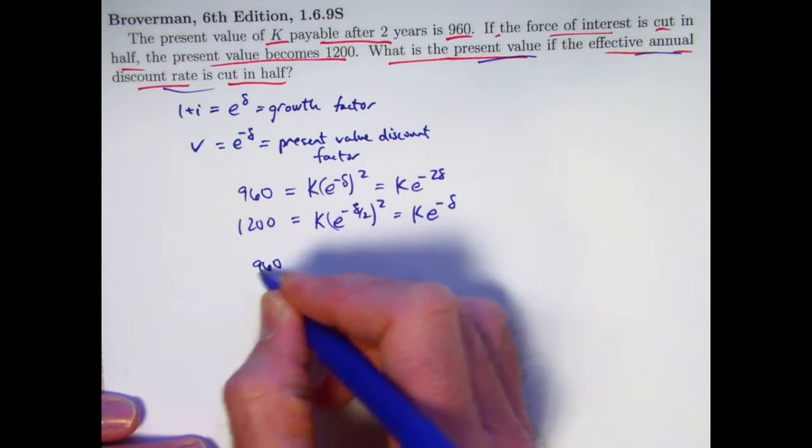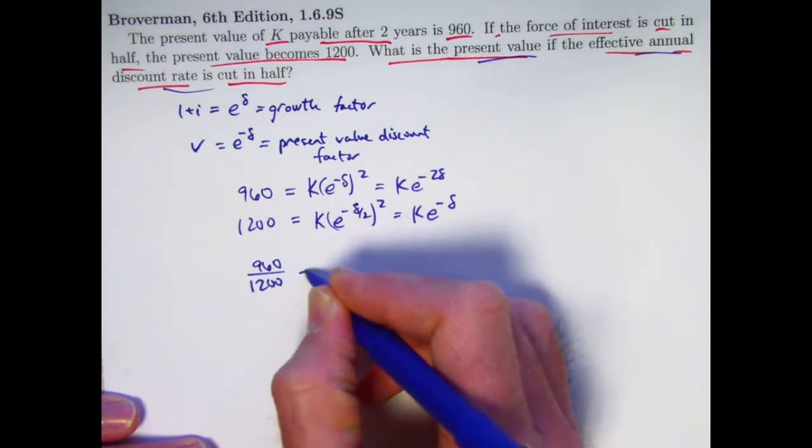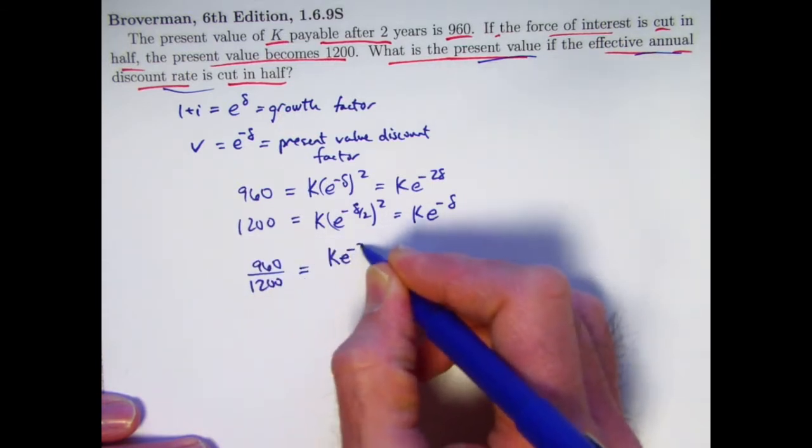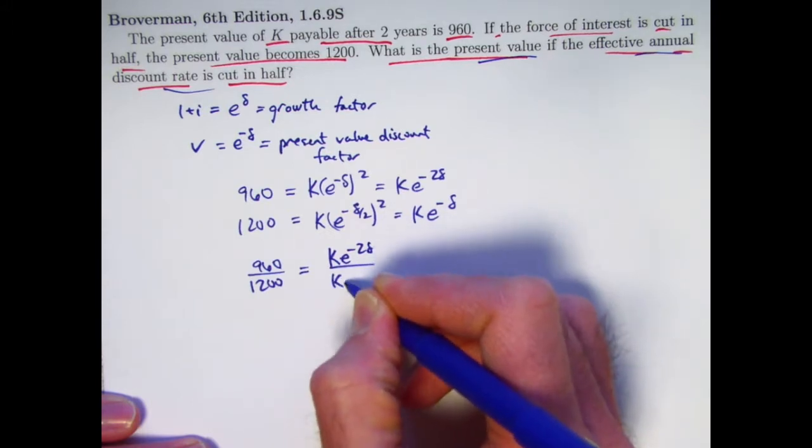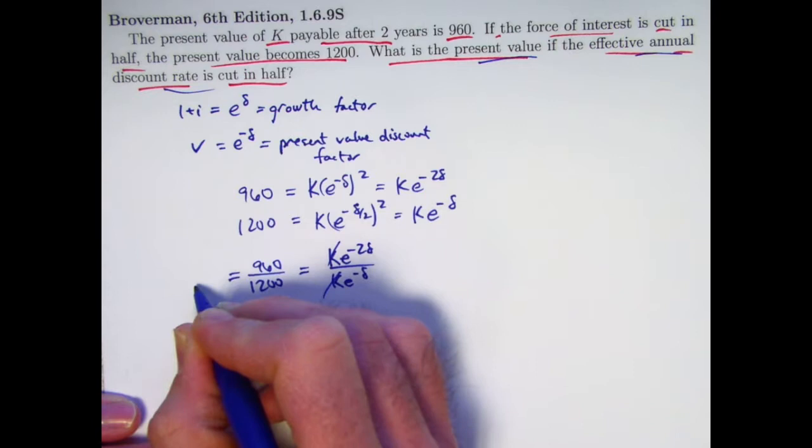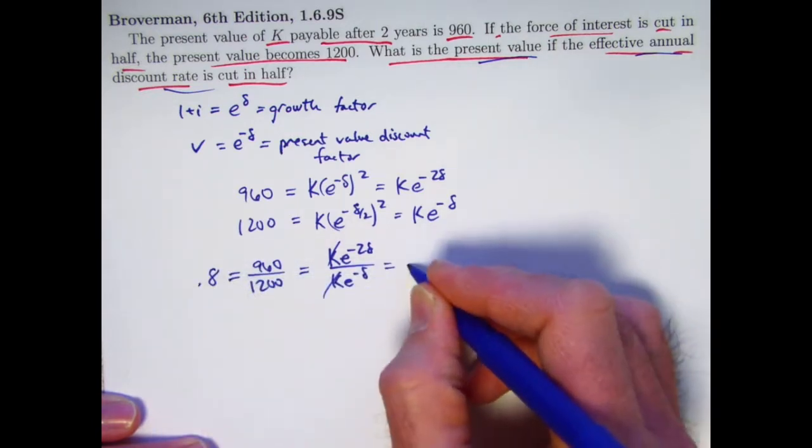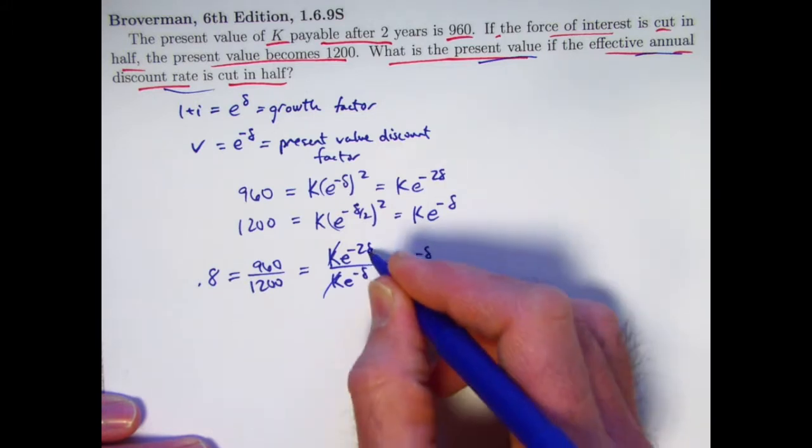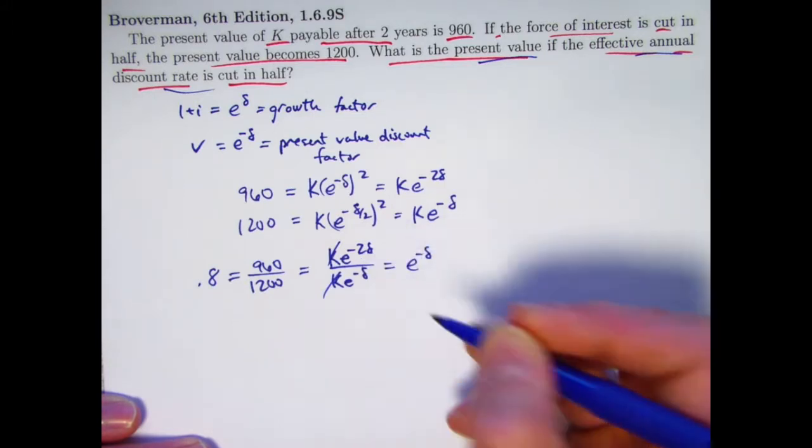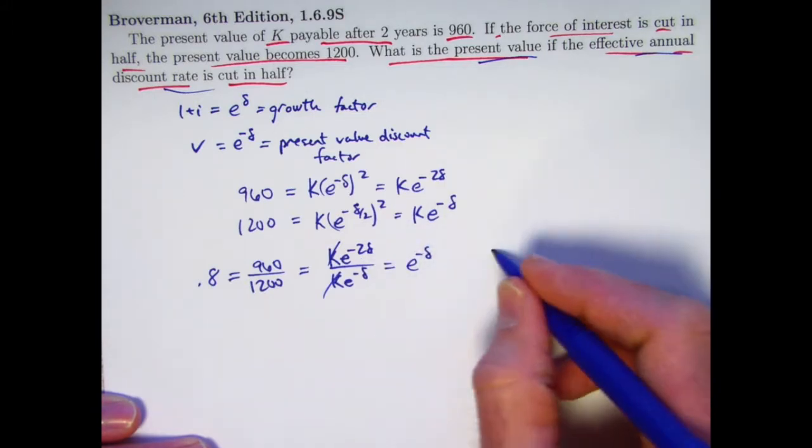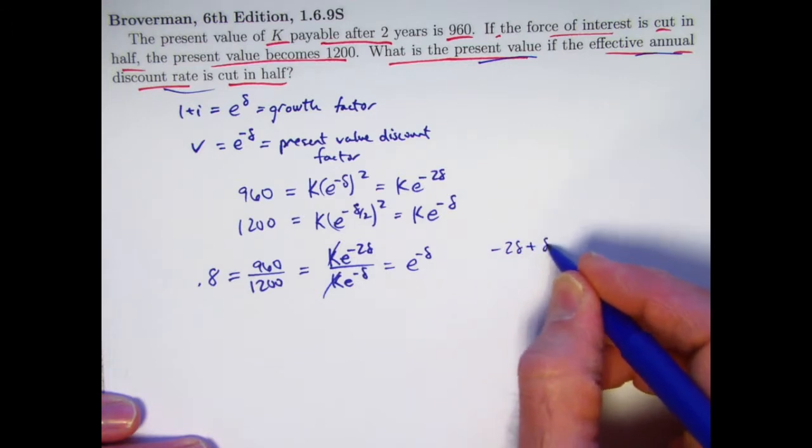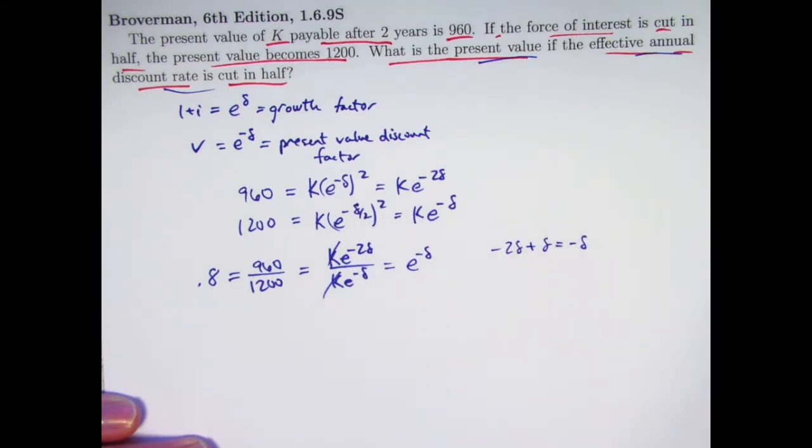You can write 960 divided by 1200 equals K e to the negative 2 delta divided by K e to the negative delta. The K's will cancel. If you check on your calculator, this is 0.8 over here. When you simplify this, this simplifies to e to the negative delta. You would take negative 2 delta minus negative delta, which would be the same as negative 2 delta plus delta to get an exponent of negative delta there.